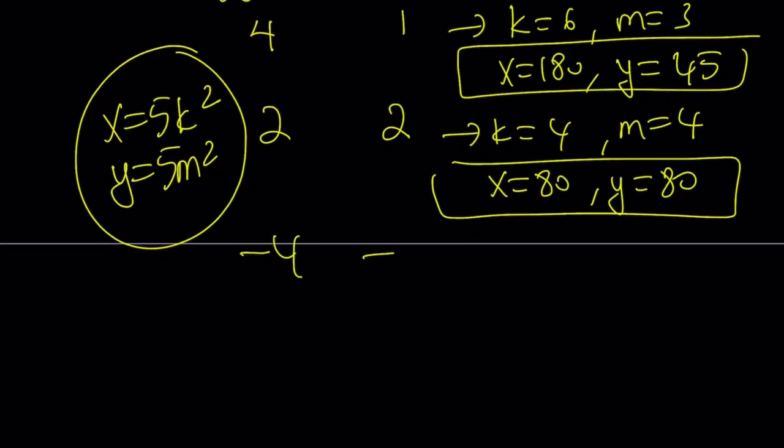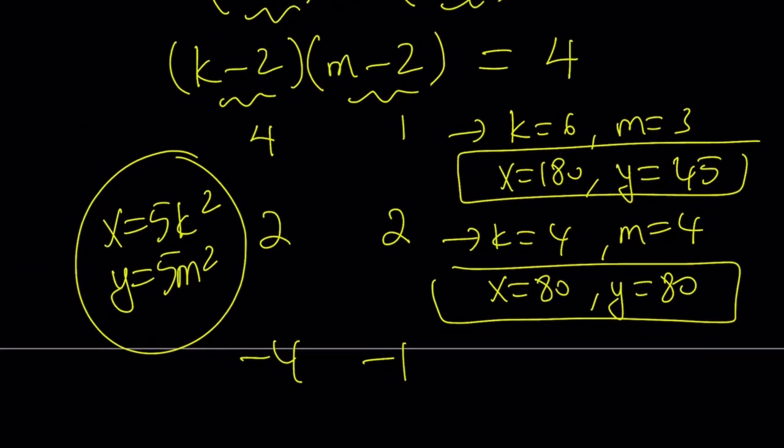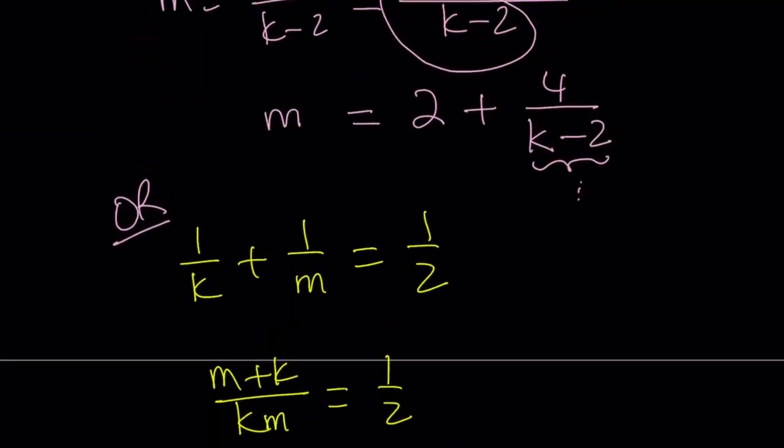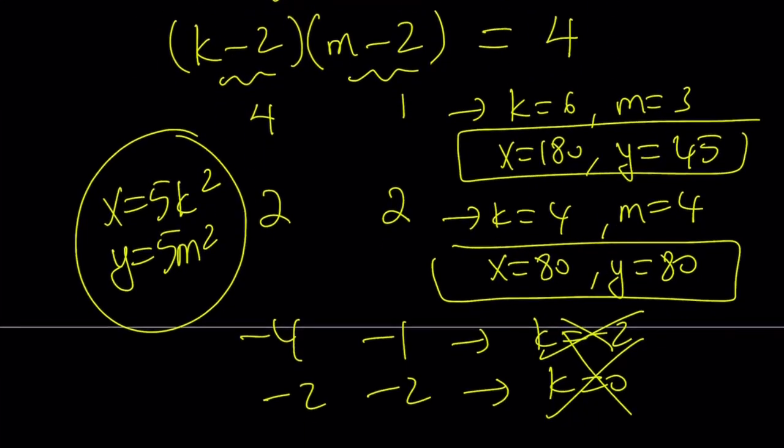How about negative 4 and negative 1? If k minus 2 is negative 4, that just indicates k is negative 2. But that's not going to work. If we have negative 2 and negative 2, that means k is 0. That's not going to work either because if k is 0, x is 0. That's a no-no. You can't do it.